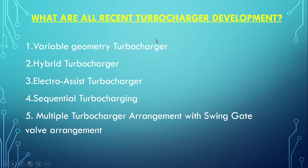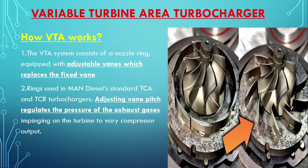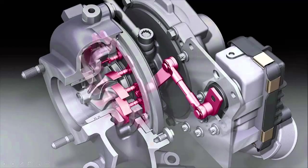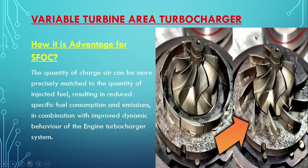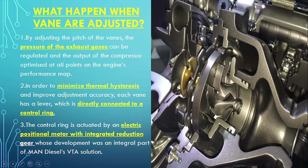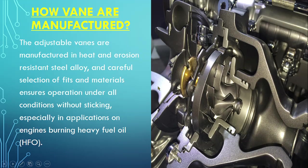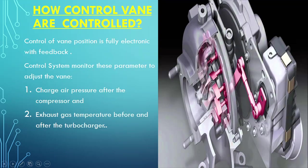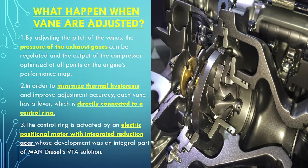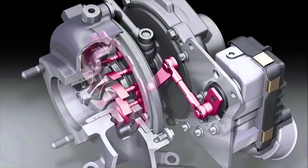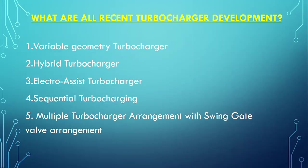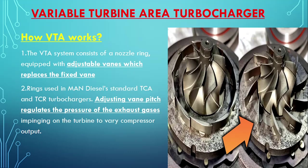In today's video we are going to focus on variable geometry turbocharger, which is also called VGT. Through a series of diagrams we will see how this VTA — variable turbine area — works. After that we will see how it is an advantage for SFOC, what happens if we adjust the vane, how the vanes are manufactured, and how the control vanes are controlled. These are all exam questions regarding the variable turbine area turbocharger, and based on that I have made pictorial representations and a PPT.